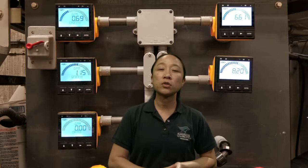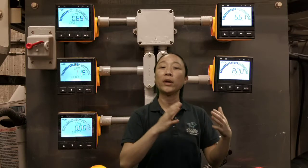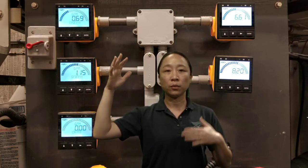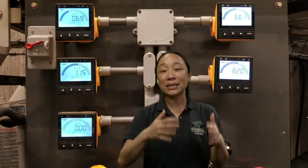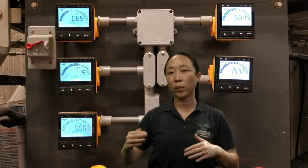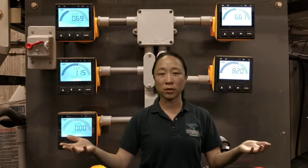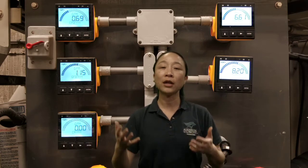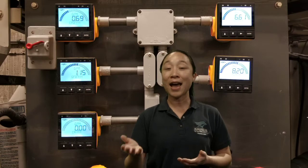Some corals need a stronger flow and some need a weaker flow. So we put pumps inside the exhibit at different places to get different levels of flow. How do you know which corals like what? You go back out to the ocean and look at where those corals typically live, and that tells you where to place them in your exhibit.